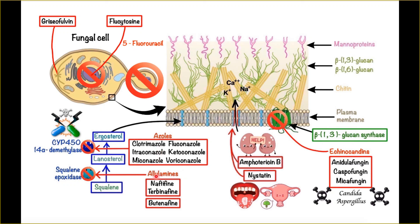We also have allylamines that inhibit squalene metabolism by inhibiting squalene oxidase — these include terbinafine, naftifine, and butenafine. These drugs are less commonly used but are equally effective to the azole derivatives including fluconazole and clotrimazole. We also have griseofulvin, which inhibits mitotic tubule formation and thereby inhibits division of the fungi cell, and flucytosine, which is converted to 5-fluorouracil and inhibits nucleic acid synthesis and cell division.